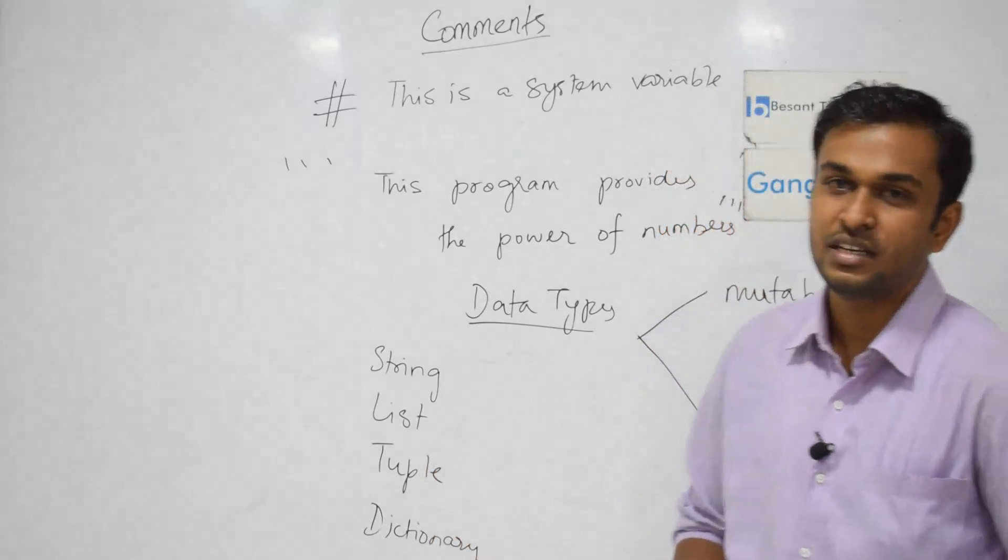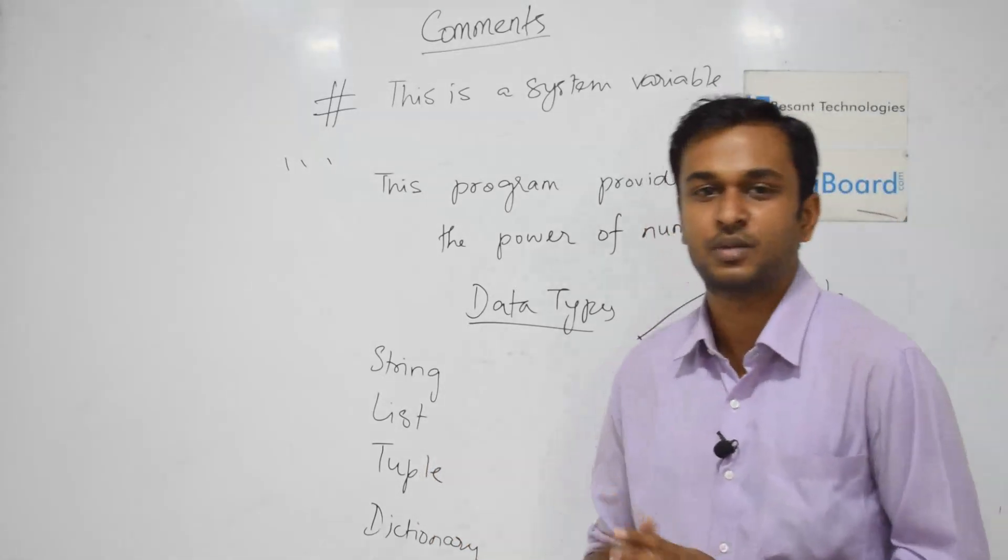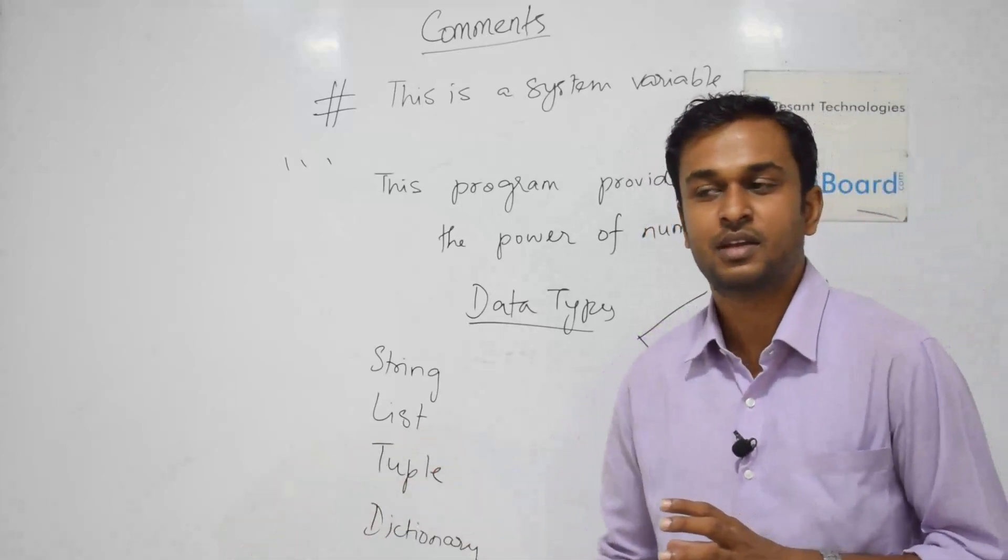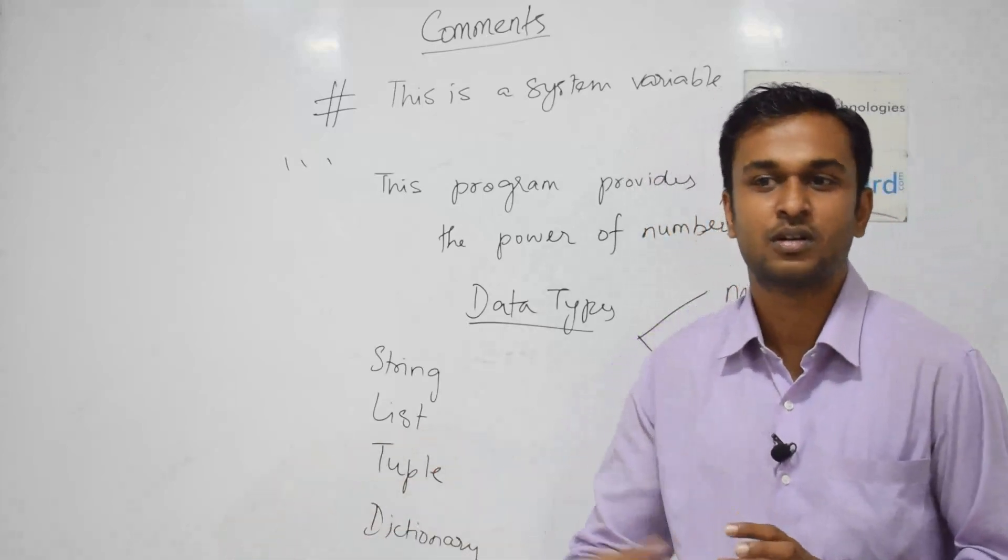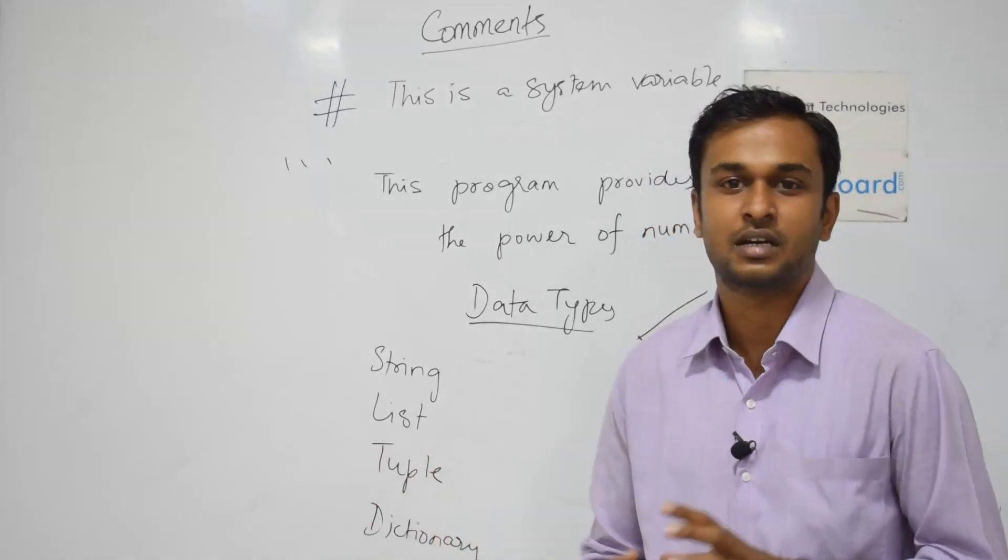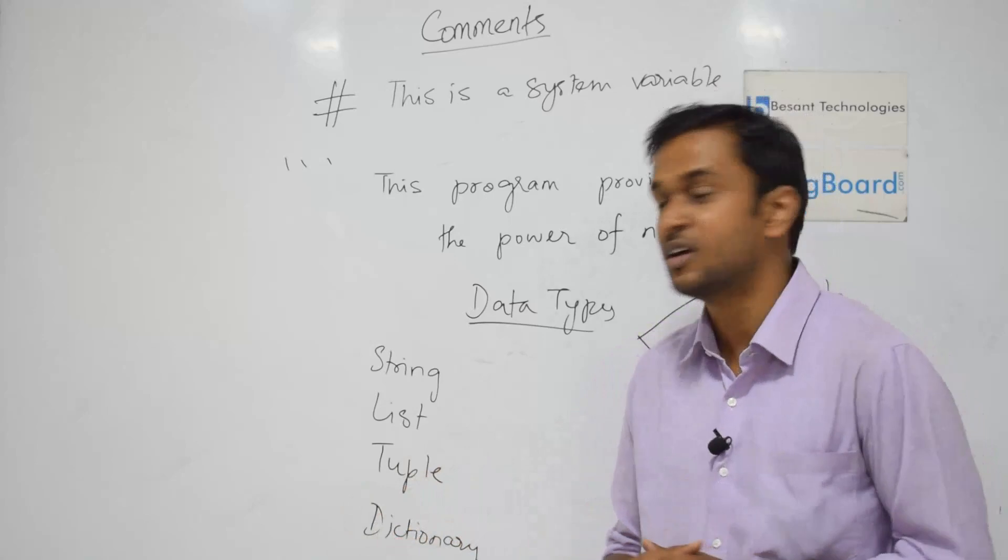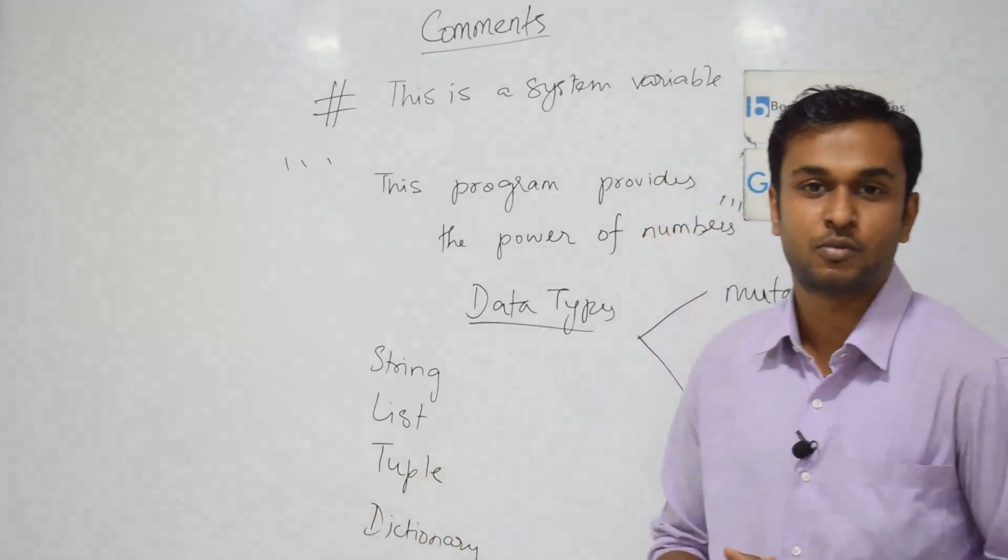Next one is dictionary. Dictionary is just like a normal English dictionary where we can use some value. That means we can use a key. In the dictionary, we can use a collection of items that is organized. That is why dictionary is organized.